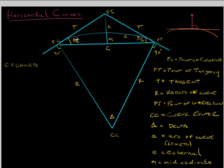This angle here, from the PC to the PI, the angle between that line and the chord, is always delta over two. The chord is sometimes called the long chord.